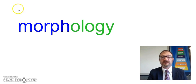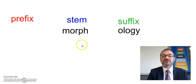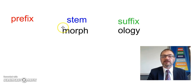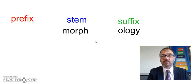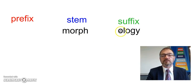Morphology is the study of the ways in which different parts of words are put together. So here, morph means shape — that's carrying most of the meaning for this particular word. Morph is the shape. Ology is the study of something. So morphology is the study of shapes.